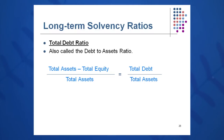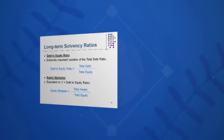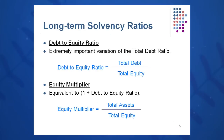Another very important long-term solvency ratio is debt to equity — what percentage of our equity is our debt? How leveraged are we? This is total debt to total equity, and again, both are found on the balance sheet.